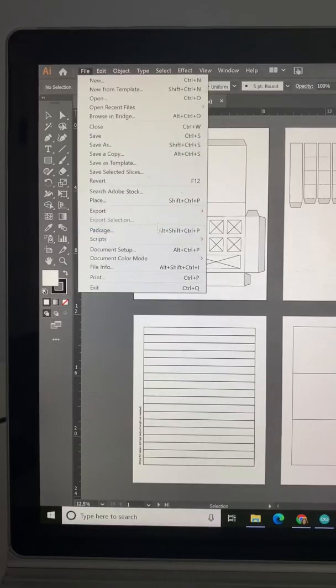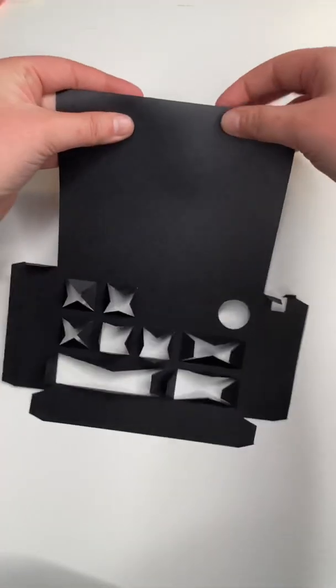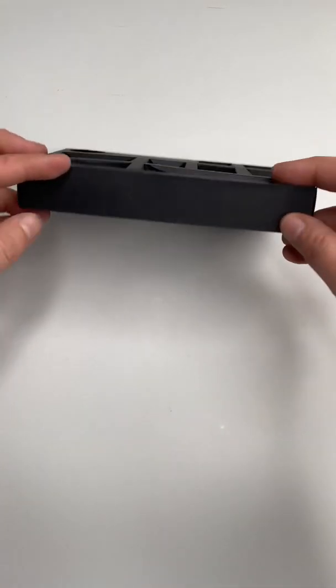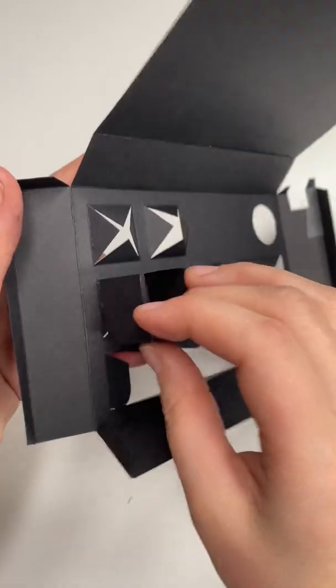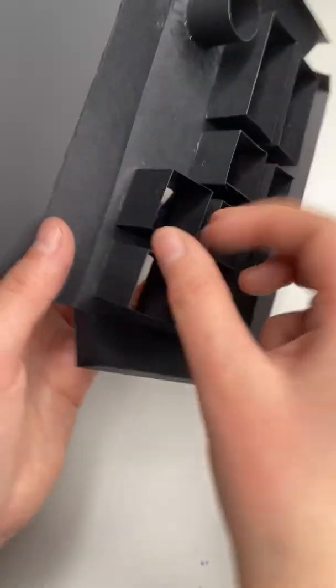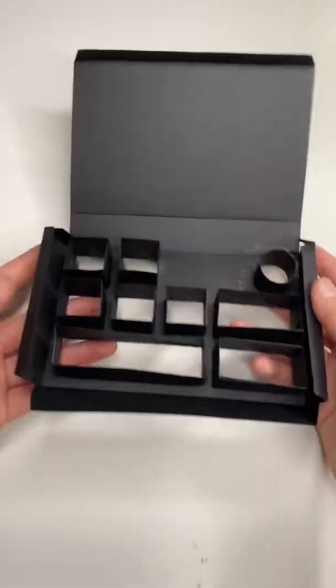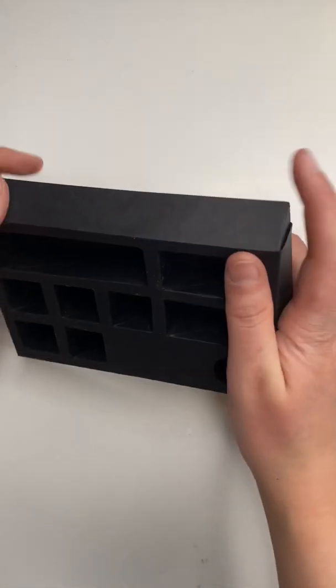Then I went ahead and designed and printed my own custom template. Here I am collapsing the box. And then I started to glue on the little crowns of each box, similar to my waffle box design. This time I had a few different shapes like the circle button and the rectangular space bar as well.